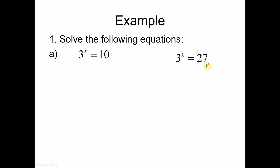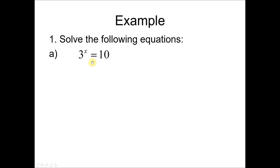We know that 27 is actually equals to 3 to the power of 3, and by comparison we can compare the indices — x and 3. So x equals to 3, since the base is the same. But for this question we cannot do it using the previous method because it's very hard for us to convert 10 to indices with base 3. So in this case we have to use logarithm to help us. Whenever the power is an unknown, we can always use logarithm to help us find the unknown. We'll use logarithm for both sides.